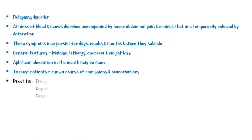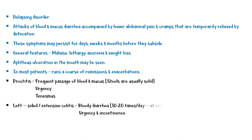Proctitis is characterized by frequent passage of blood and mucus, urgency, and tenesmus. In an acute attack of left-sided or extensive colitis, patients will have bloody diarrhea, passing up to 10 to 20 liquid stools per day, usually occurring at night, along with urgency and incontinence.